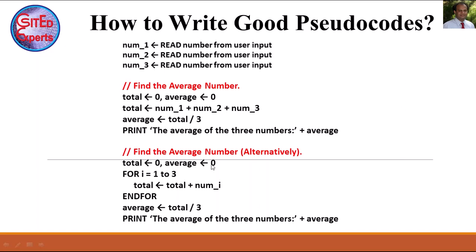Alternatively we can do it differently. The total and average variable initializations to zero are the same. The average initialization is optional in this case, because we are not using a previously assigned garbage value for average — we assign average = total / 3 directly. But for total, assigning zero is required to avoid a garbage initial value.